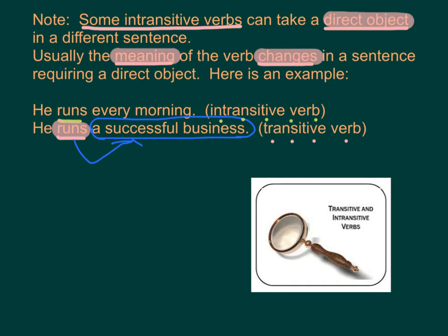Note: Some verbs can be used as either transitive or intransitive in different sentences. Usually the meaning of the verb changes when a direct object is required. Here is an example: 'He runs every morning.' (intransitive) vs. 'He runs a successful business.' (transitive)